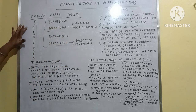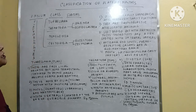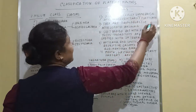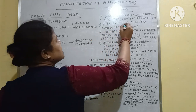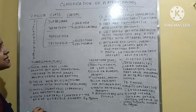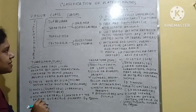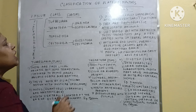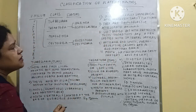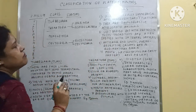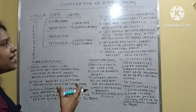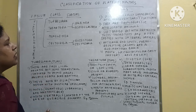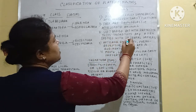The features of Platyhelminthes are: the body is bilaterally symmetrical and dorsoventrally flattened. These are triploblastic and acoelomate animals, meaning coelom is absent. Triploblastic means three germ layers are present. The body is very soft, but the protective covering is mucus, which not only protects the body but also lubricates it. Some species have internal spicules.